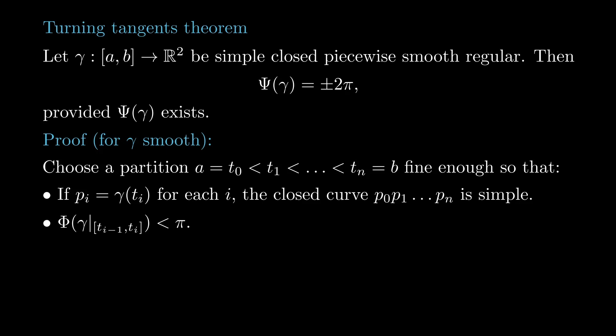By the Jordan curve theorem, the curve gamma divides the plane into regions, its interior and its exterior. From now on, we will assume the region surrounded by gamma lies on its left. The other case is of course analogous.